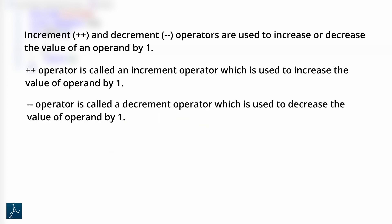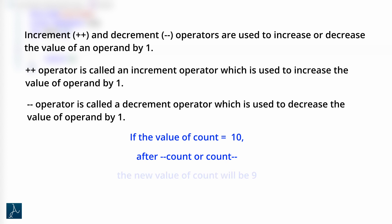The minus minus operator is called the decrement operator, which is used to decrease the value of the operand by 1. This means if the value of variable count is 10, then using minus minus count or count minus minus will decrease the value of count by 1. The new value of count will be 9. Here also, the minus minus operator can be prefix or postfix.